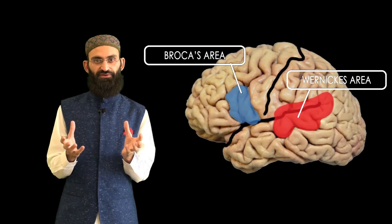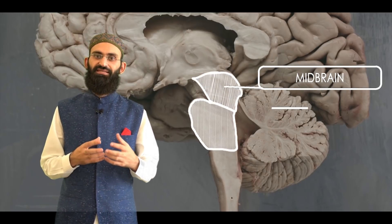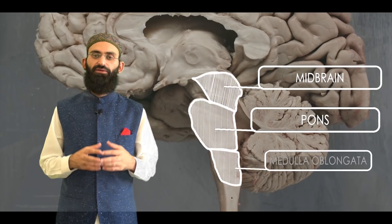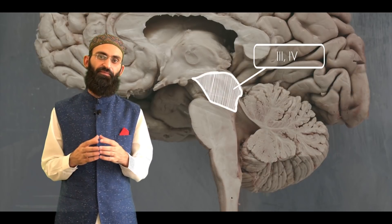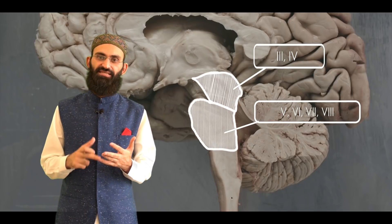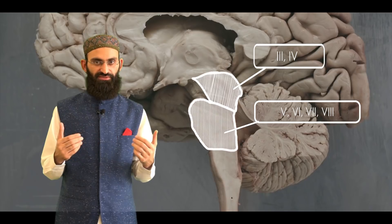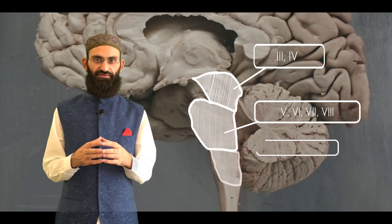The cerebral hemispheres are connected to the brainstem through cerebral peduncles. The brainstem has three parts: midbrain, pons, and medulla oblongata. A number of cranial nerves leave the brainstem — the 3rd and 4th cranial nerves leave the midbrain, the 5th, 6th, 7th, and 8th cranial nerves leave the pons, and the last four cranial nerves leave the medulla oblongata. The medulla oblongata passes through the foramen magnum and continues as the spinal cord.